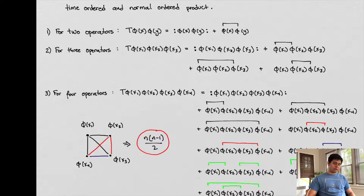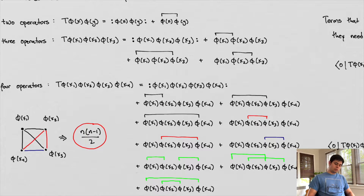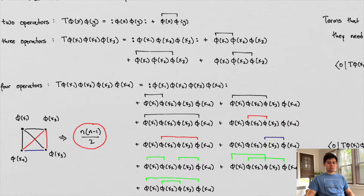So for three operators, what does this mean? The difference between the time ordered product and the normal ordered product is equal to the contraction. But for three operators, we need to do a little bit more combinatorics, because a contraction can only exist between two fields. Remember, we define the contraction in terms of a commutation relationship, and we can only have a commutation relationship between two fields.